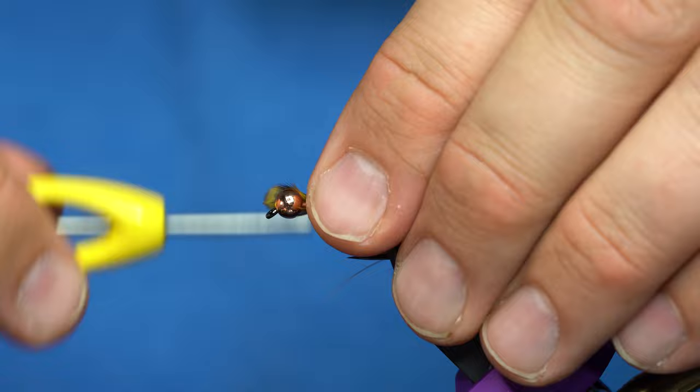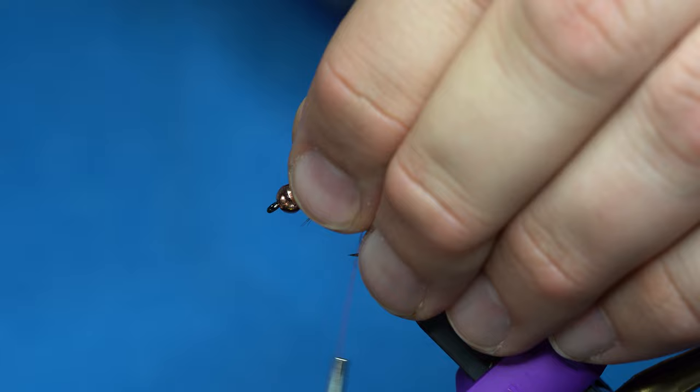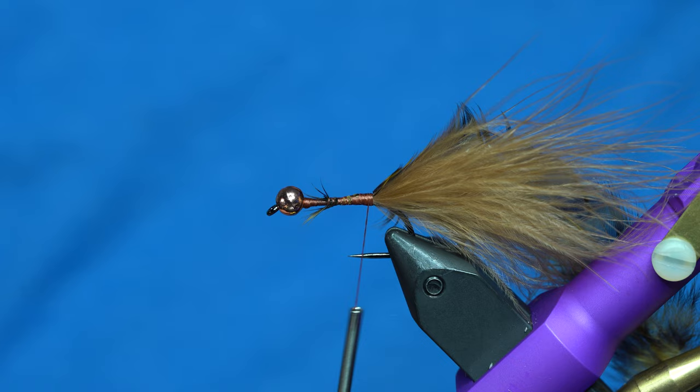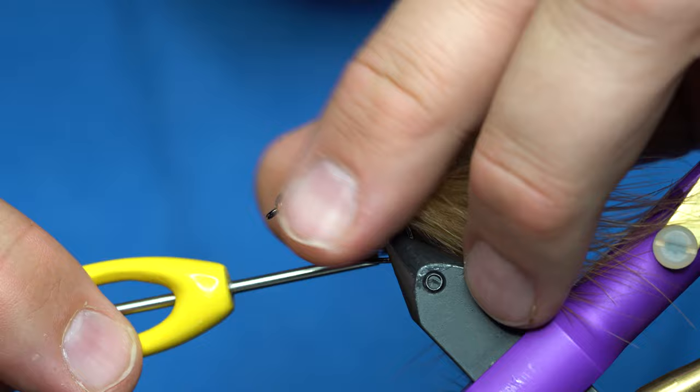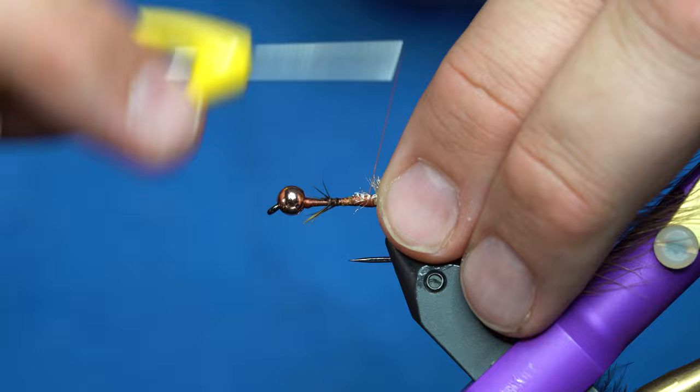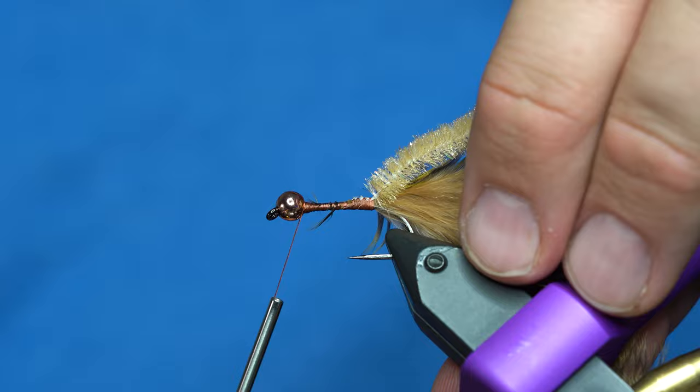And I'm just going to tie that in by the tip. Get rid of the excess. And while I'm back here, I'm going to tie in my chenille, which I'm using some tan ice chenille. I've peeled off some of the fibers so I can tie that in back there with the rest of the stuff without having too big of a bulky tie-in point.